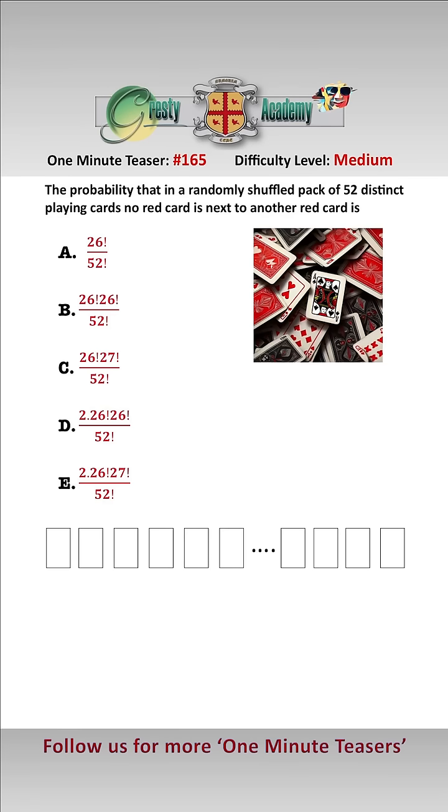With no restrictions whatsoever, there are 52 factorial ways of arranging a pack of 52 distinct playing cards. What we want to do here so that no red card is next to another red card is we want to...